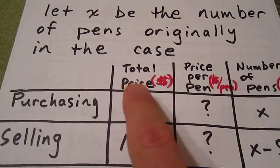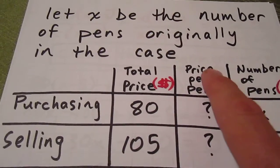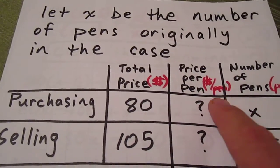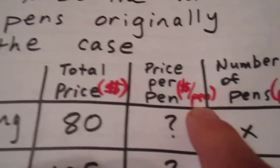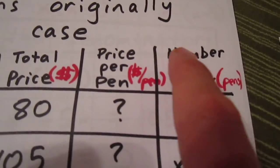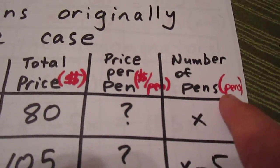Then we can set up a chart involving our three variables in our two scenarios. Our three variables are total price measured in dollars, the price per pen measured in dollars per pen, and the number of pens measured in pens.